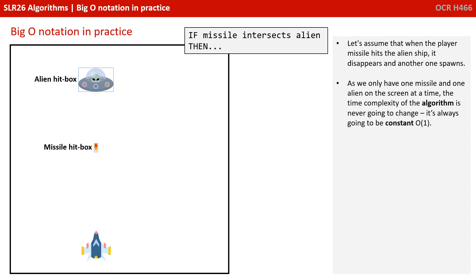Let's assume that when the player missile hits the alien ship, it disappears and another one spawns. As we only have one missile and one alien on the screen at a time, the time complexity of the algorithm is never going to change. It's always going to be constant.